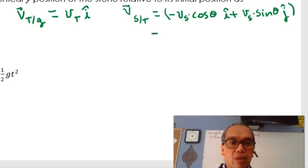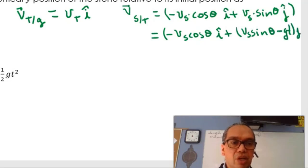The horizontal component is still minus vs cosine of theta i, but the vertical component is vs sine of theta minus gt j.